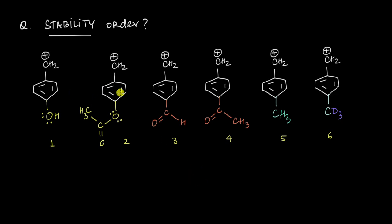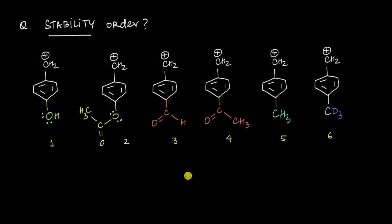What we have here are different cations — different benzyl cations to be precise — to which we have these functional groups attached. We need to arrange these cations in either increasing or decreasing order of stability. This might look really daunting at first with so many groups attached, but it's actually not that hard. We just need to analyze individually what each of these groups does to the benzyl cation.